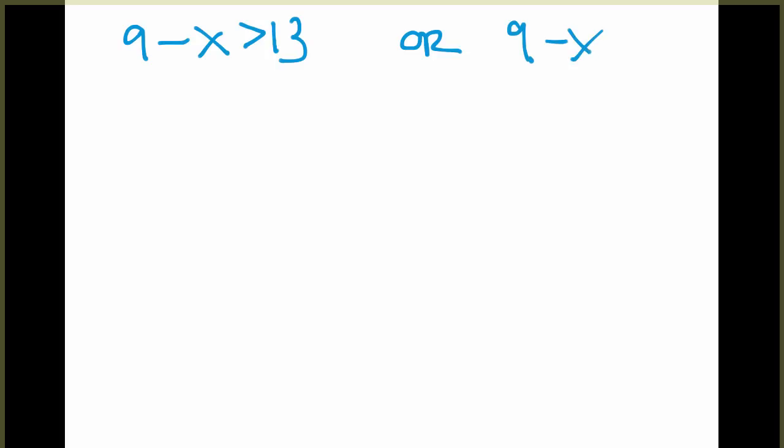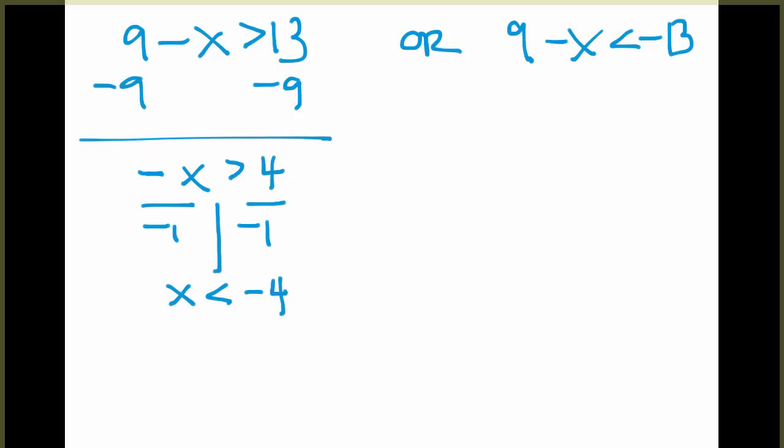When you're solving this, the one thing to be aware of is that we have a negative x. So again, we have to divide by a negative 1, and when we divide by a negative 1, we flip the sign again. So x has to be less than negative 4.